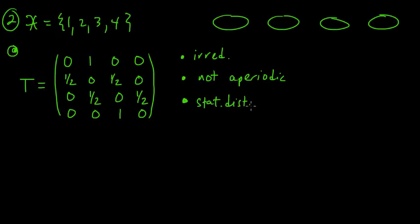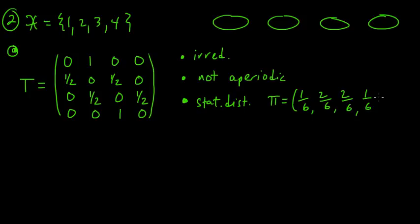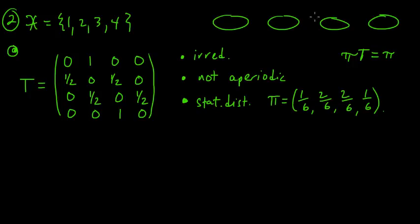Let's think about the stationary distribution. This one has the following stationary distribution: one-sixth, two-sixth. This is just a simple algebra exercise — just middle school algebra. You write down the equations you have to solve, and this is what you get. So this is the stationary distribution. You're spending more time in the middle and less time at the boundaries.